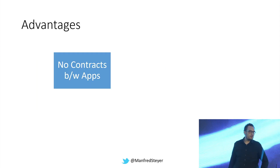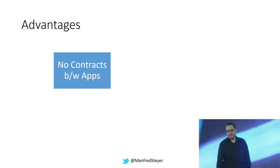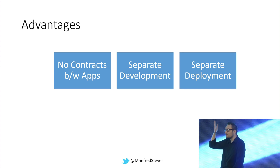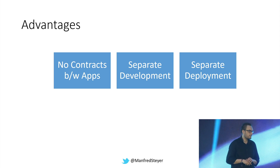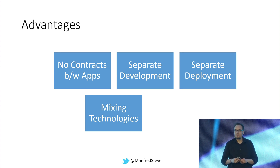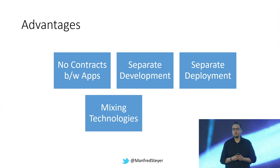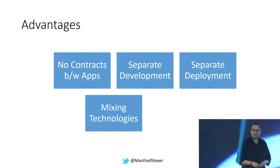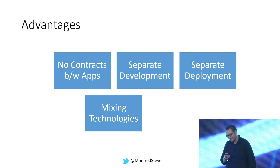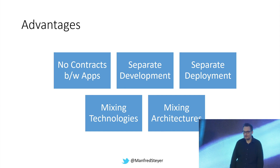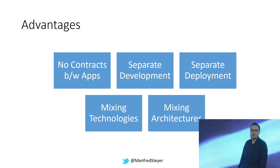This brings a lot of advantages: you don't have contracts between applications since they are self-contained and can work on their own. You have separate development and separate deployment — when you're done, just put it on the server and the user can use your new development immediately. You don't have the burden of using just one technology — you can mix and match. Use Angular for this application, AngularJS for that one, VanillaJS for another. You can also mix and match architectures — each micro app can have its own architectural style, using what is most suitable for the current needs.